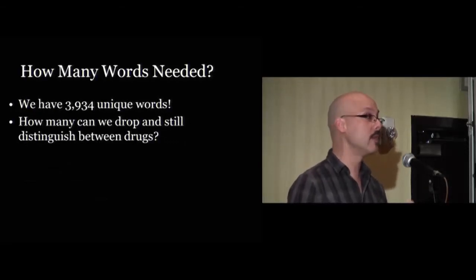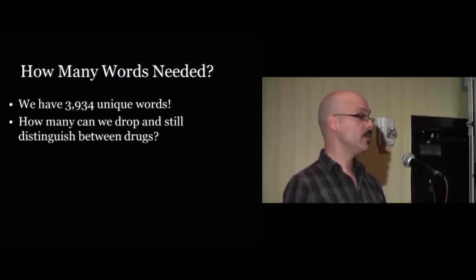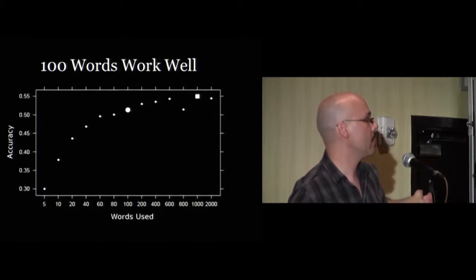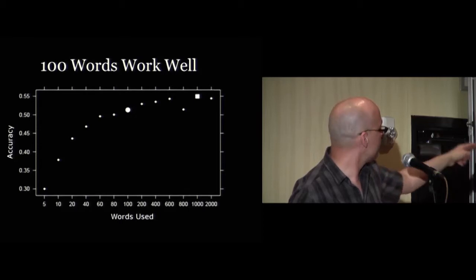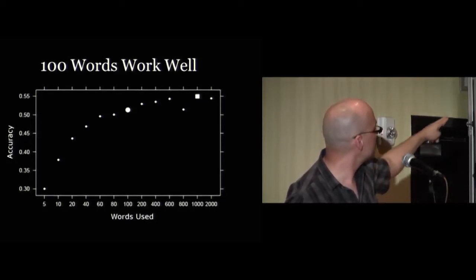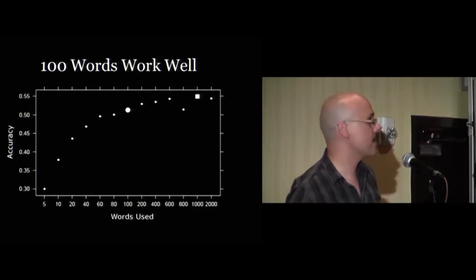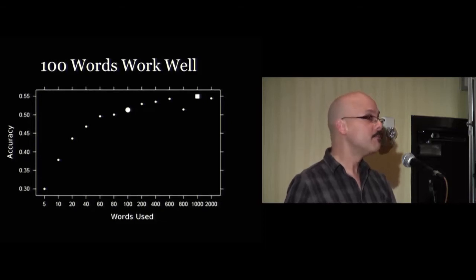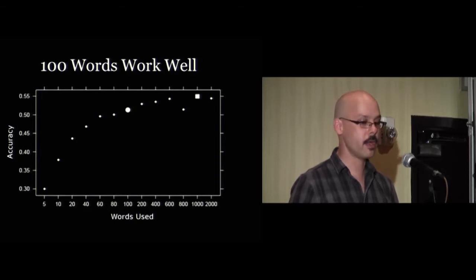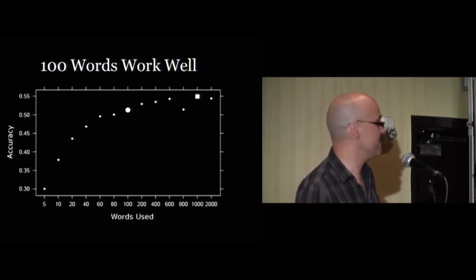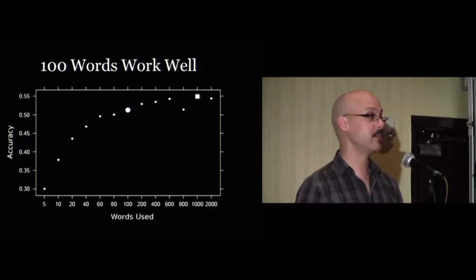Starting with about 4,000 words, we progressively dropped words to find which were really important. On the horizontal axis is the number of words kept, from large to small, and vertically is accuracy. Our best performance was at 1,000 words, but with just 100 words we got basically the same performance. You can even do surprisingly well with 20 or 10 words, but 100 words is a sweet spot — something you can actually look at and make sense of.